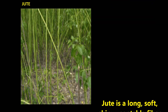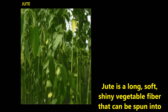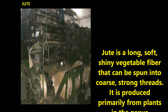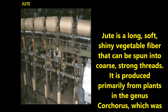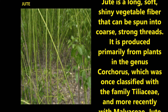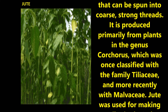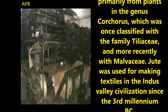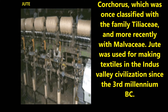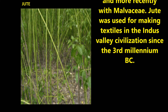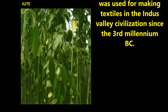Now let us discuss about jute. Jute is a long, soft, shiny vegetable fiber that can be spun into coarse strong threads. It is produced primarily from plants in the genus Corchorus, once classified with the family Tiliaceae and more recently with Malvaceae. Jute was used for making textiles in the Indus Valley Civilization since the third millennium BC.